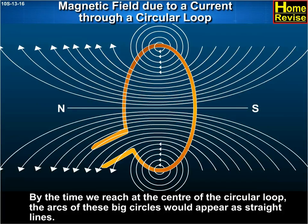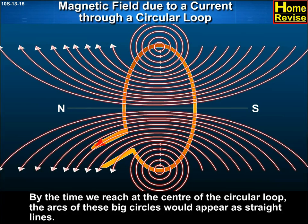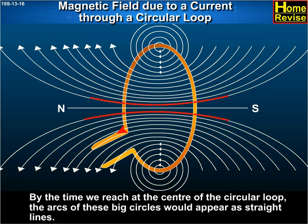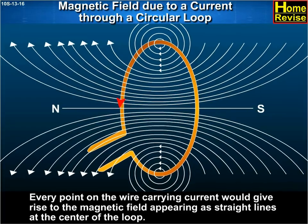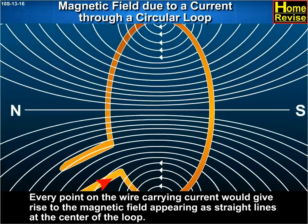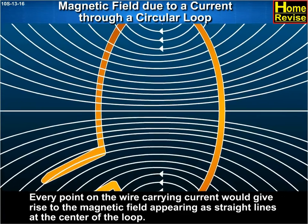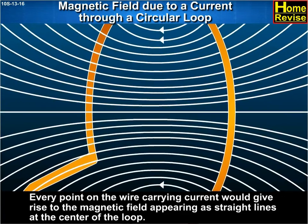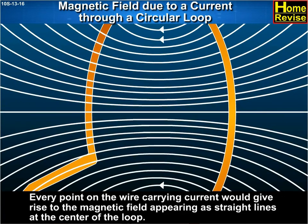By the time we reach at the center of the circular loop, the arcs of these big circles would appear as straight lines. Every point on the wire carrying current would give rise to the magnetic field appearing as straight lines at the center of the loop.